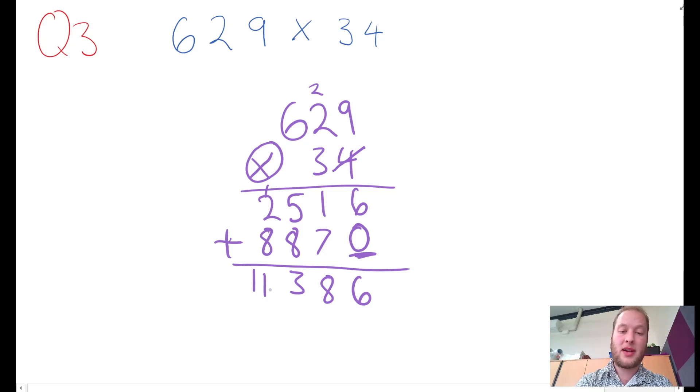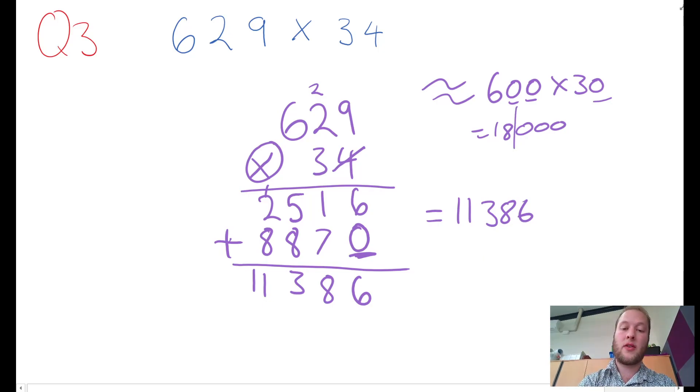Final step: quickly do an estimate. 600 roughly times by about 30. Six times 3 is 18, and then plus the 1, 2, 3 zeros—I've got 18,000. My answer is 11,000, that's close enough. At least it's both in the tens of thousands. I hope you've learned something new today. All the best with your work.